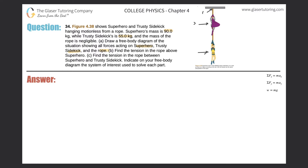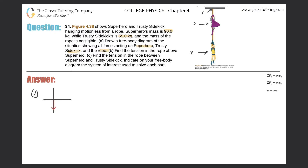I'll label these points one, two, and three and draw them separately. At point one — where the rope connects to the ceiling — there is a weight pulling down, representing the combined weight of the superhero and trusty sidekick below. Since the rope is hanging motionless, there must be an equal and opposite force pointing up from the ceiling. This tension I'll call T1.